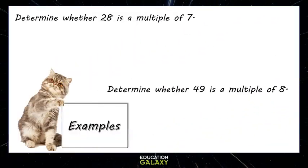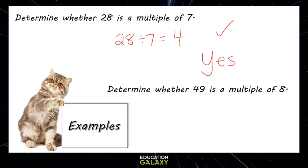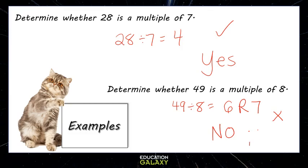Let's try some examples. Determine whether 28 is a multiple of 7. If we divide 28 by 7, it equals 4 — that means it goes in evenly, so the answer is yes. The second example: determine whether 49 is a multiple of 8. If we divide 49 by 8, it goes in 6 times, but that's only 42, and there's a remainder of 7. So it doesn't go in evenly — therefore, 49 is not a multiple of 8.